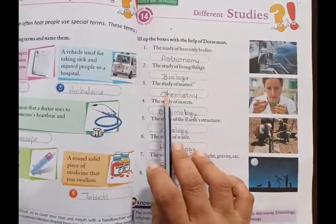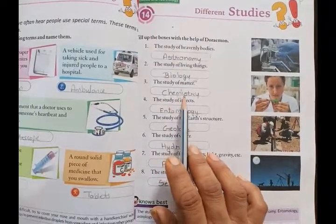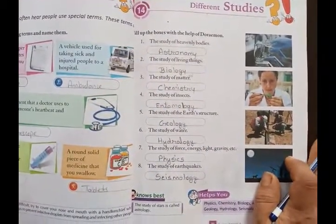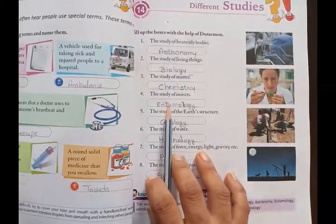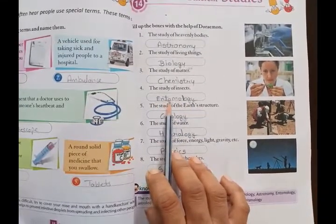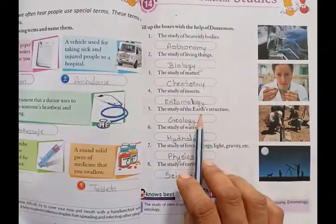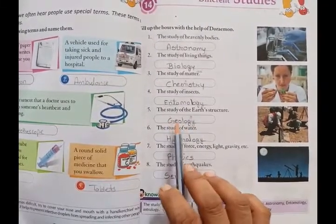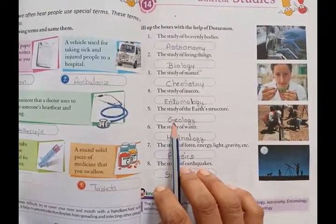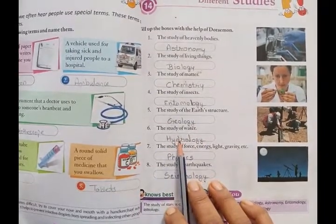The study of matter is called chemistry — C-H-E-M-I-S-T-R-Y. Fourth: the study of insects is called entomology. Fifth: the study of the earth structure — prithvi ke structure ke baare mein — is called geology.